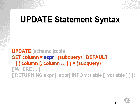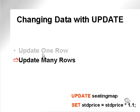This is the UPDATE statement syntax, where we update a table and set columns equal to values. The WHERE clause filter allows us to update either a single row or a subset of rows within a table. Removing the WHERE clause altogether means no filtering, so we update all the rows in a table, as in this example updating the seating map table and changing the standard price.